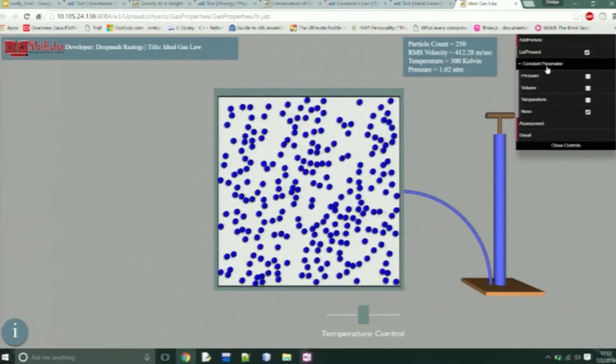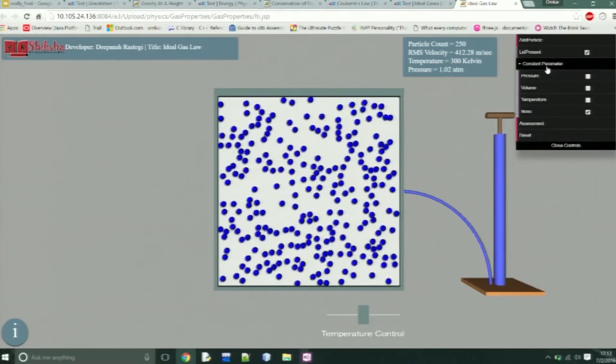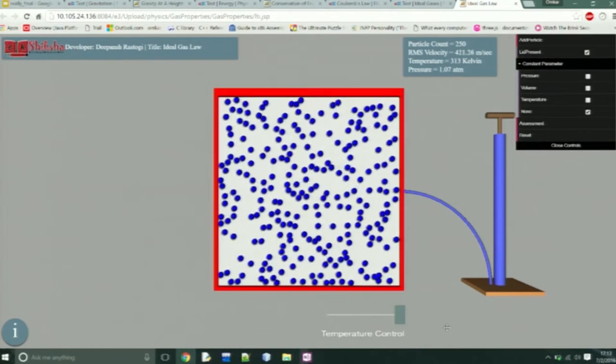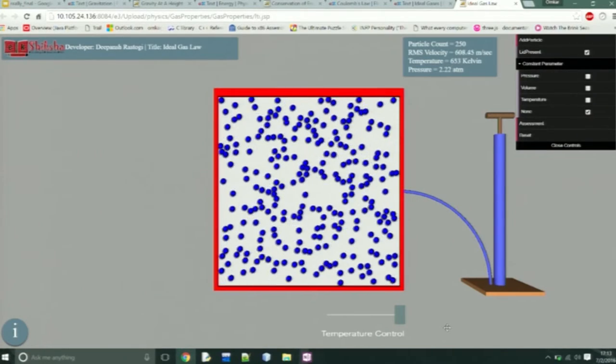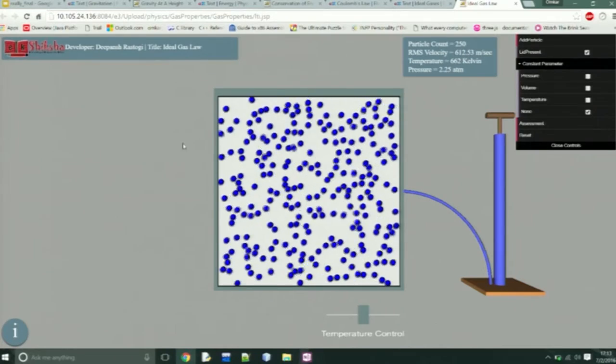Here we can change the temperature to see the effect of temperature on pressure and RMS velocity, and we can change the volume and see the effect on pressure.